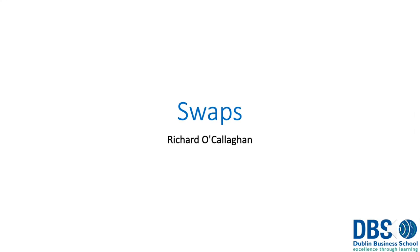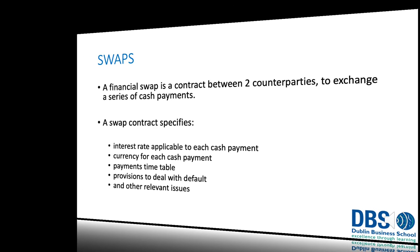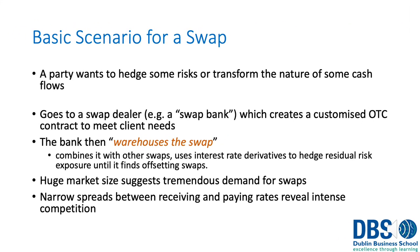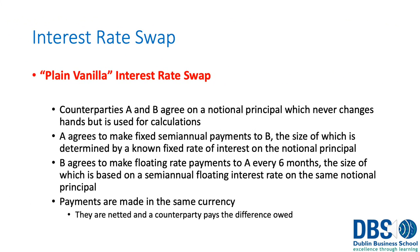The final type is swaps. With a swap, if a party wants to hedge some risk or transform the nature of a cash flow, they go to a swap dealer — sometimes called a swap bank — which creates a customized over-the-counter contract to meet the client's needs. The bank warehouses the swaps, placing them alongside other swaps and using interest rate derivatives to hedge the residual risk until it finds an offsetting swap. The huge market size suggests massive demand, while the narrow spread suggests intense competition.